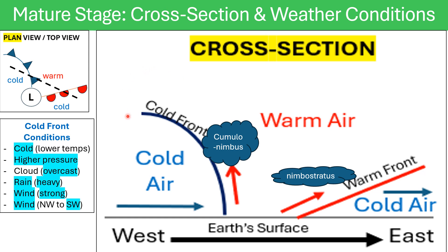Focusing on the cold front: as it moves eastwards, the warm air rises up that front, cools down, and condensation occurs. Clouds form and eventually it rains. The types of clouds that form at the cold front specifically are cumulonimbus clouds — you need to remember the word cumulonimbus. These are thunder clouds and they are going to produce heavy, heavy rainfall along the cold front.